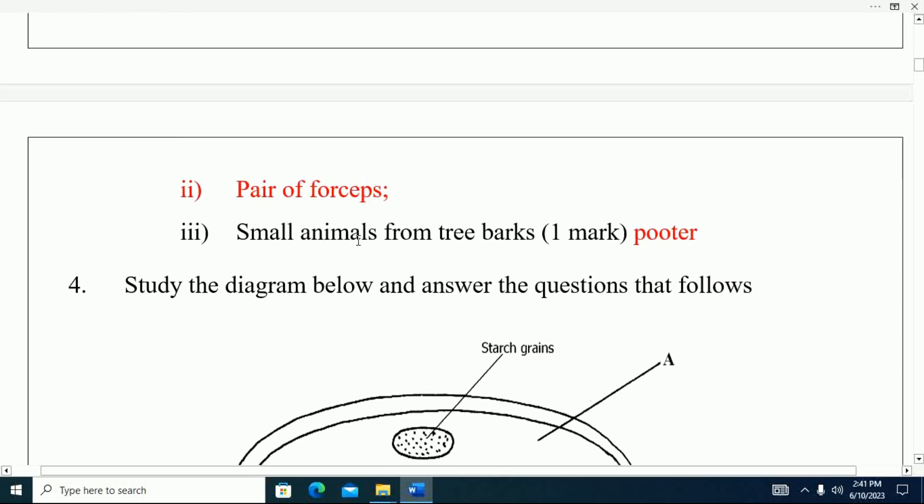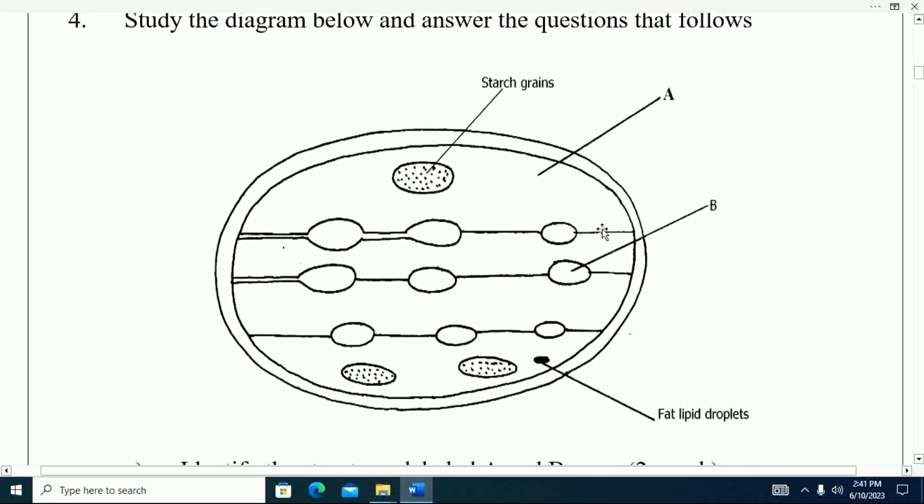They also wanted to collect some small animals from the stream or ponds, and the best apparatus is a pooter.